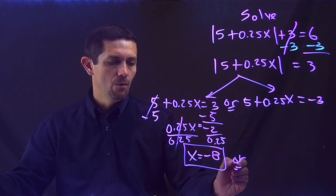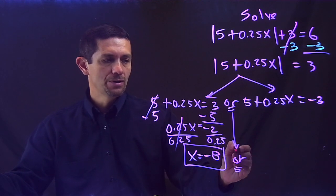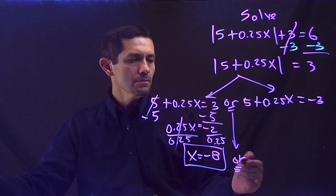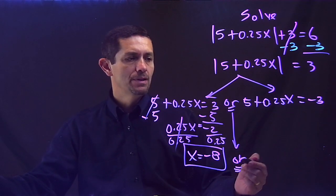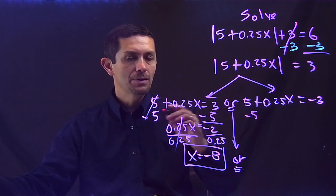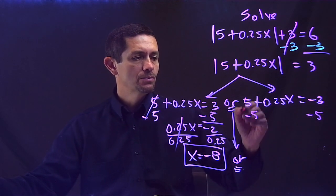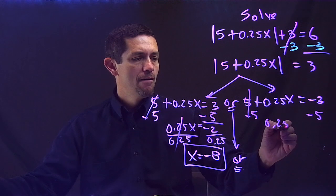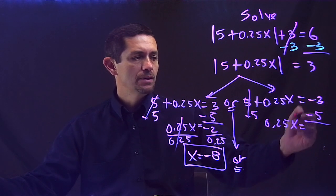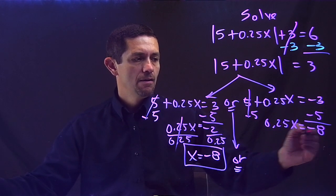Then I have my OR, you see that? I got to bring that down, and I have to solve this side. So 5 plus 0.25x, got to cancel the 5. Same process that I did on this side already. Minus 5 on both sides. 0.25, negative 3 minus 5 is negative 8.